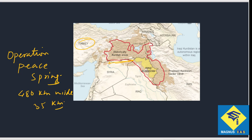Why this safe zone? Because in the 8-year-old Syrian war, many Syrians have moved into Turkey, and Turkey wants to relocate them back by creating this 480 km wide and 35 km deep controlled area.